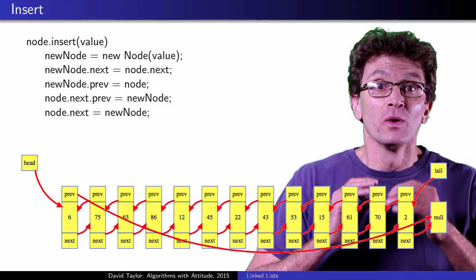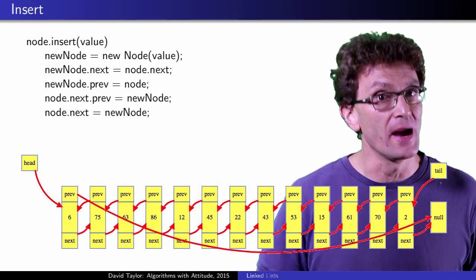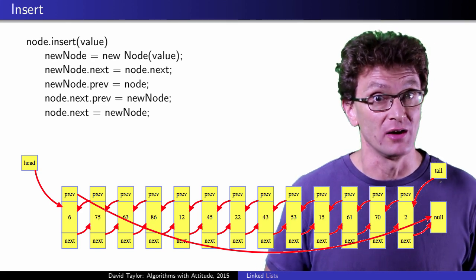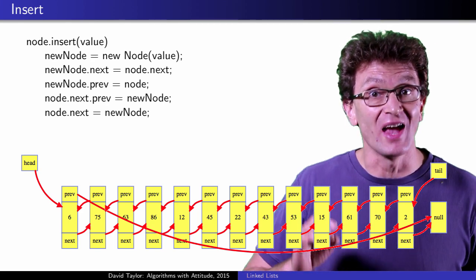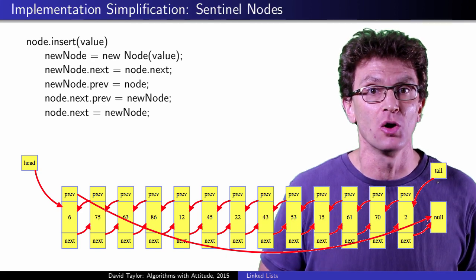Right now, we have some special cases. This code won't work if you are inserting to an empty list, or the head, or the tail. You could add boundary condition checks for those cases, but if you are willing to use a sentinel node, you can simplify special cases right out of your code.